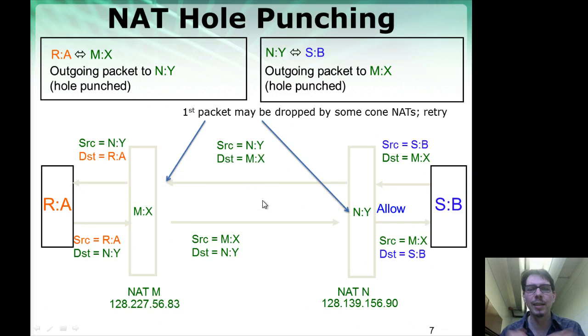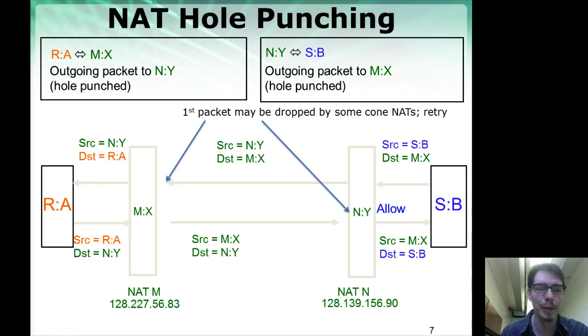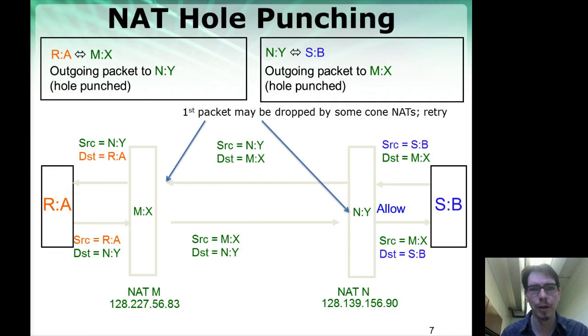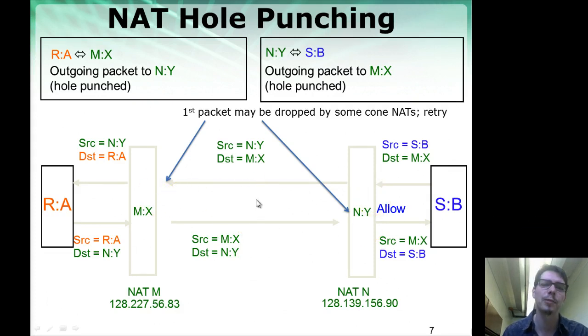Once a TEAM (ICE) link is established, communication can flow directly between Alice and Bob without going through the TURN server, without going through the STUN server, and without going through an XMPP server. It's really just between these two endpoints.